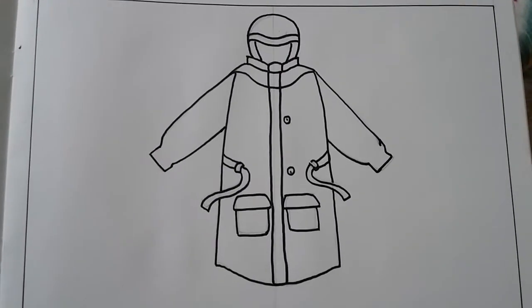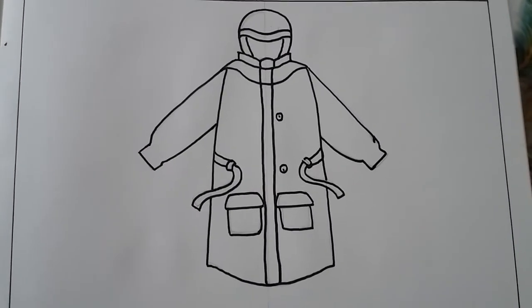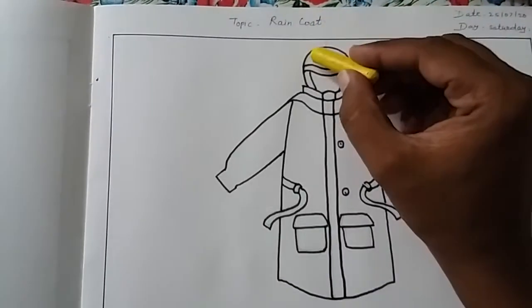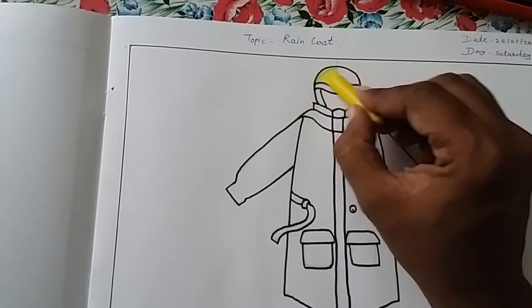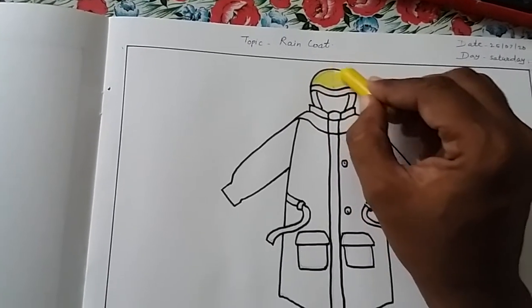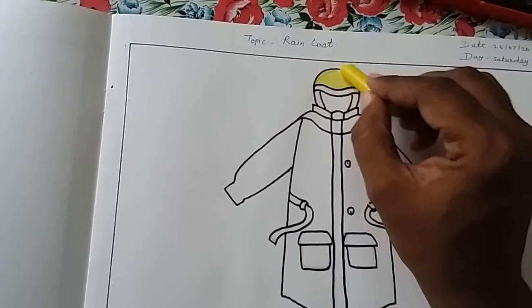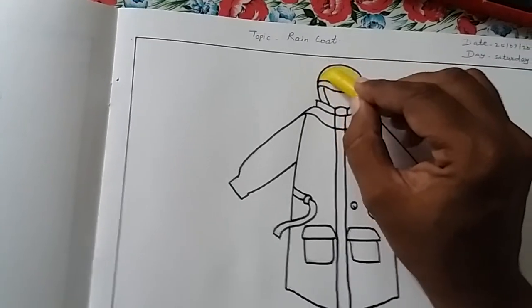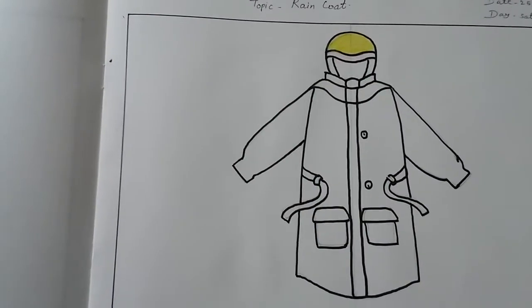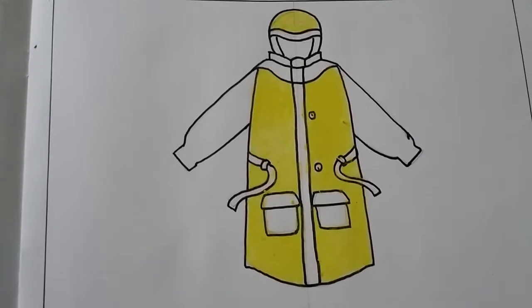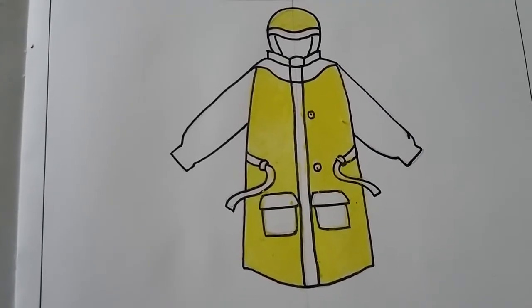sketch pen. Like this, sketch pen border has completed. Now I am starting color. You can use any color which you like. Use the oil pastel color only. Like this, yellow color I have colored.